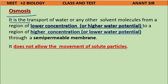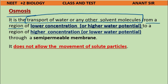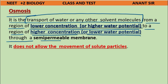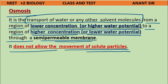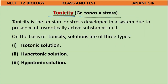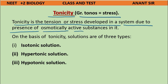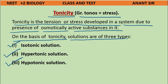Osmosis is the transport of water or any other solvent molecules from a region of lower concentration (higher water potential) to a region of higher concentration (lower water potential) through a semi-permeable membrane. It does not allow the movement of solute particles. Tonicity is the tension or stress developed in a system due to the presence of osmotically active substances. On the basis of tonicity, solutions are of three types: isotonic, hypertonic, and hypotonic.